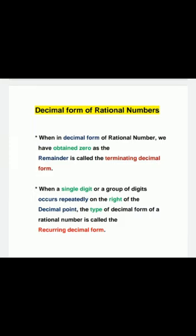Decimal form of rational numbers. When in the decimal form of rational numbers we have obtained 0 as the remainder, it is called the terminating decimal form. And when a single digit or a group of digits occur repeatedly on the right of the decimal point, that type of decimal form is called the recurring decimal form.